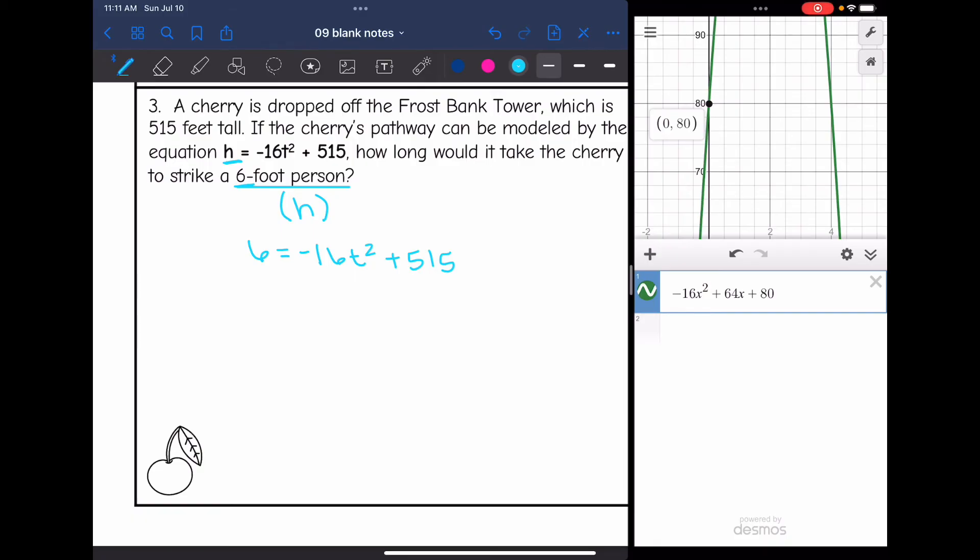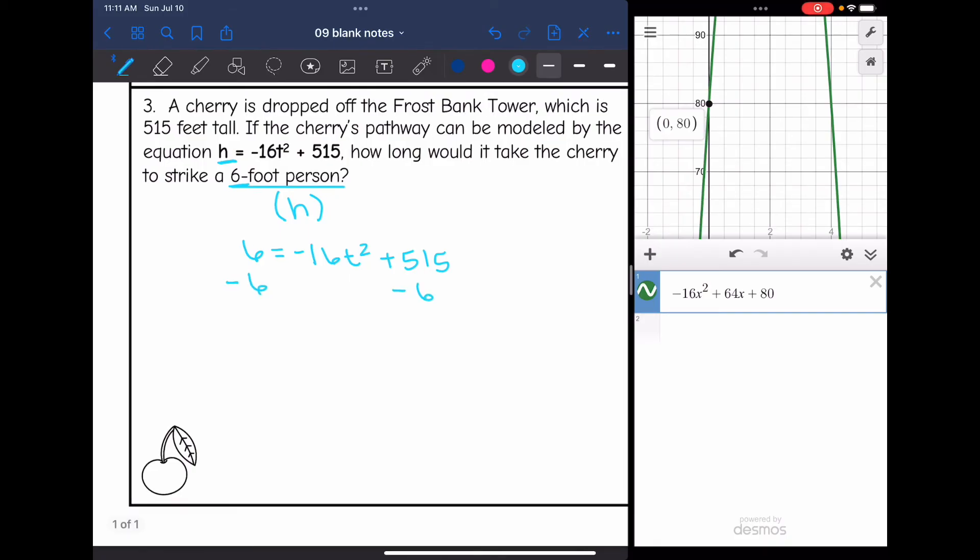In order to graph this, I need to set it equal to zero. So I'm going to subtract 6, and I get 0 = -16t² + 509.